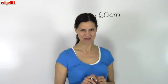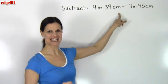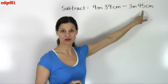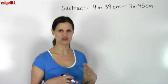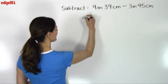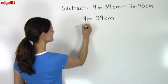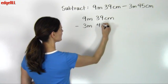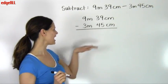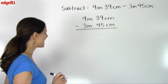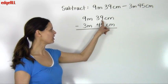Let's take a look at an example. We are asked to subtract 9 meters 39 centimeters minus 3 meters 45 centimeters. What we want to do first is align our two measurements vertically: 9 meters 39 centimeters minus 3 meters 45 centimeters. We'll draw a line and put our answer below it. The problem we can see right away is that 39 is smaller than 45.